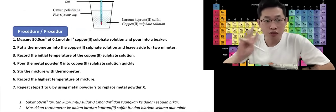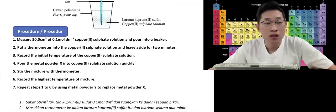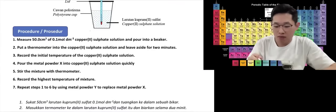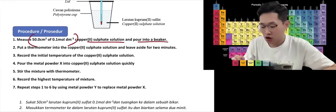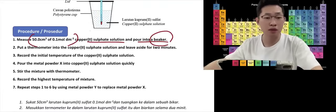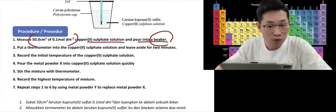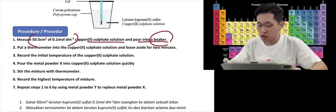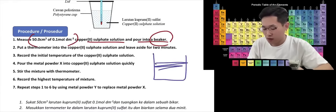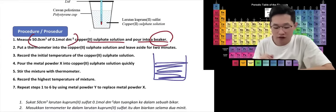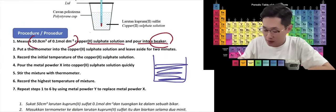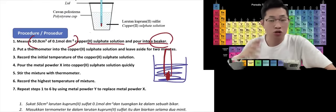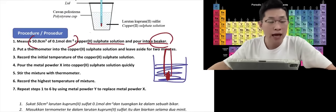Procedure. Measure the copper-2-sulfate solution and pour it into a container — the container can be a beaker, a plastic cup, or a polystyrene cup, depending on what you get tomorrow. Then insert a thermometer into the solution and leave it aside for two minutes. I think this is the reason they give you a stopwatch.